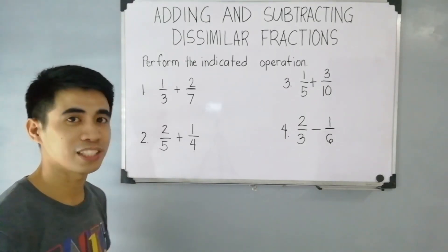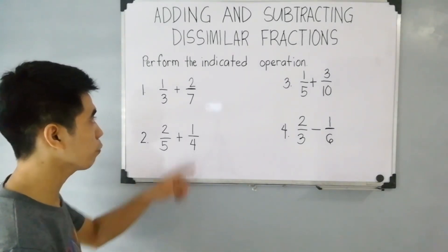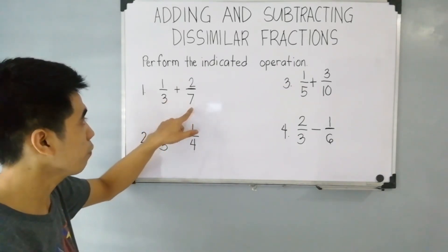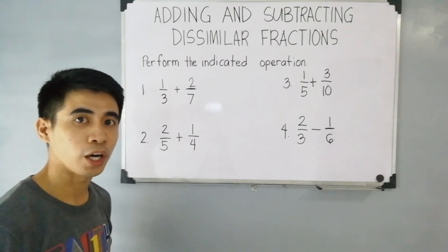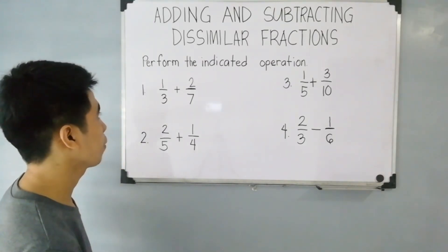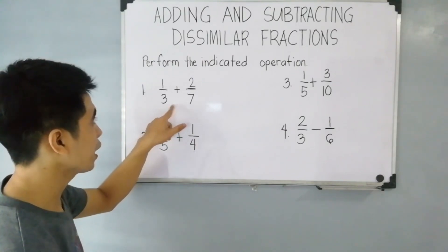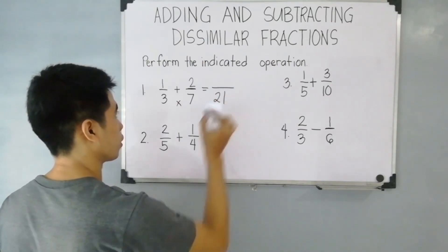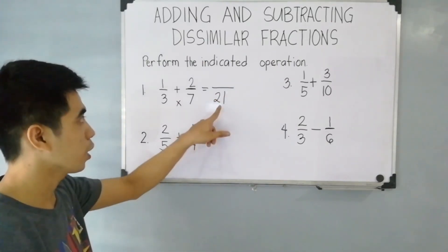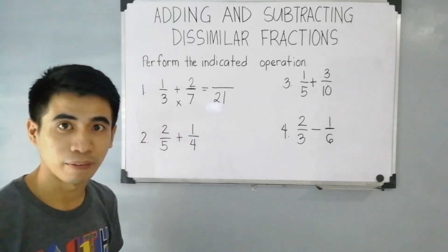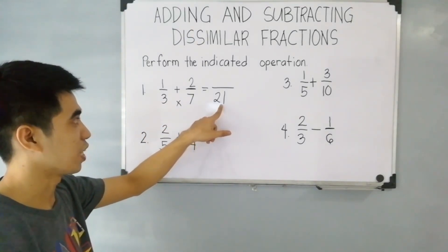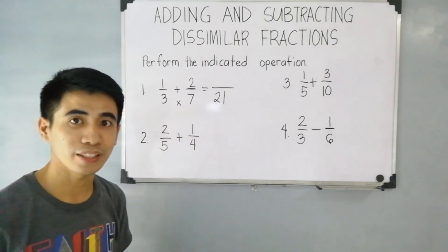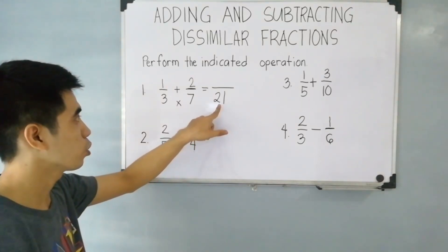How can we get the LCD? The first step is to analyze if the higher denominator is divisible by the lower denominator. 7 is not divisible by 3. Therefore, we have to use the second way — just multiply 3 and 7. So 3 times 7 is equal to 21. So 21 is a multiple of 3 and 7, and therefore 21 is the least common denominator.